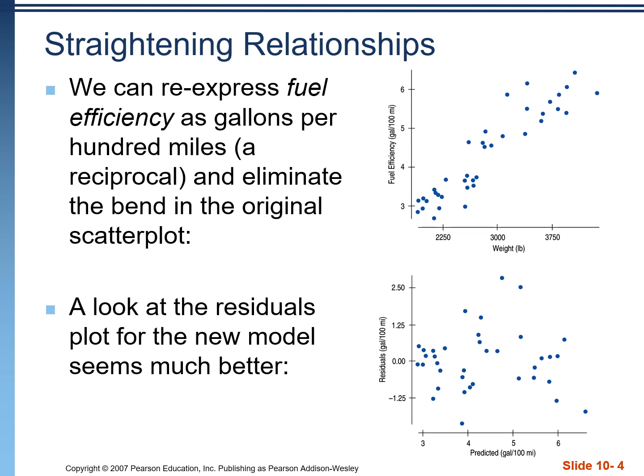So what we can do is take it and re-express it. To re-express it, we're going to take all of our Y values, and we're going to convert them into gallons per 100 miles, instead of miles per gallon. We do this with individual values. So each of these points goes through that same conversion.